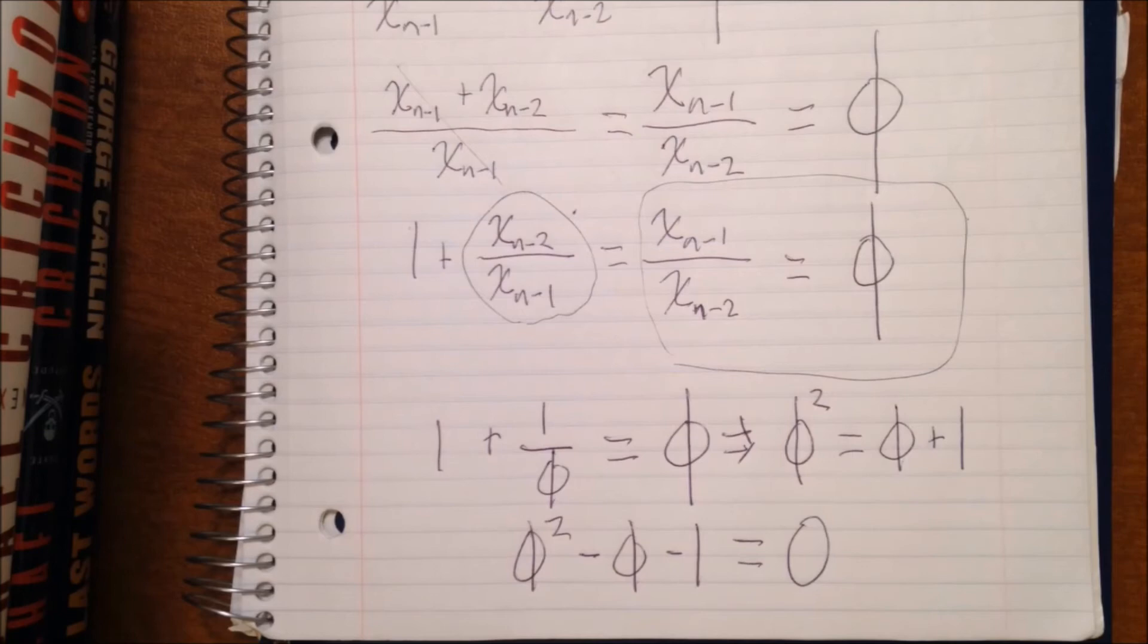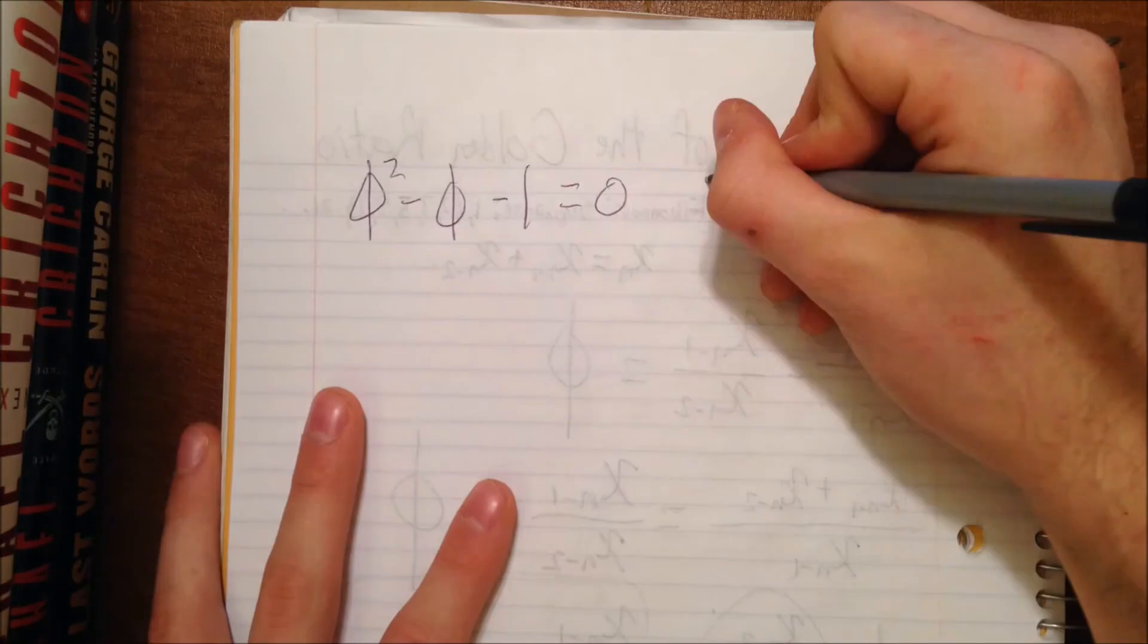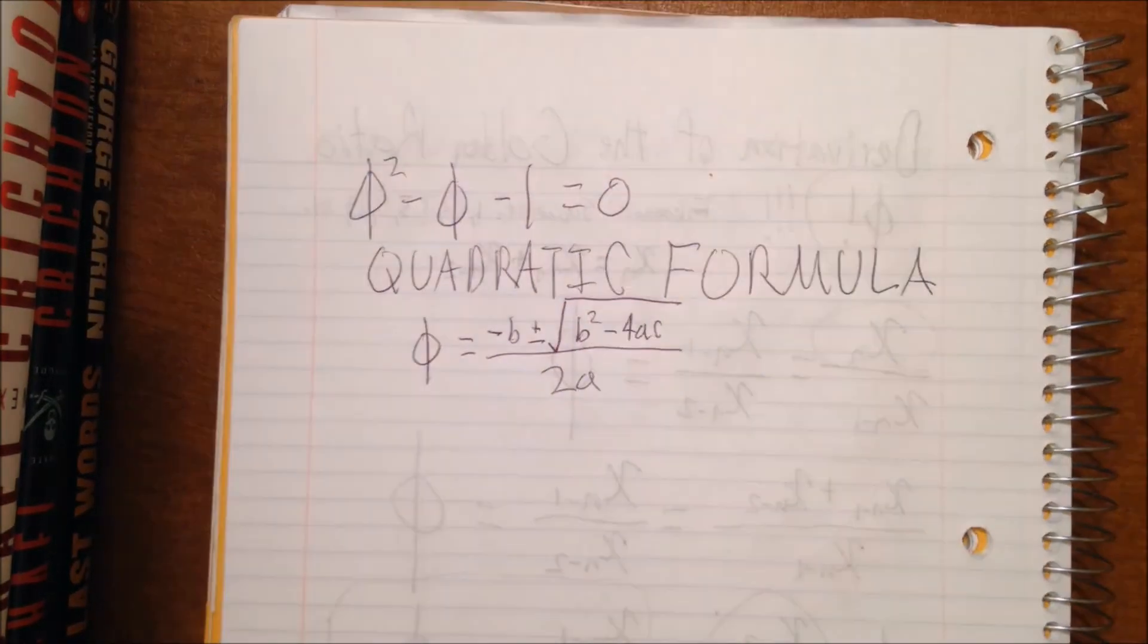So now that we've got this in a quadratic form, we can use that algebraic superhero, the quadratic formula, to get our exact value of phi. Now I'm sure you guys all know that the quadratic formula gives that x is equal to negative b plus or minus the square root of b squared minus 4ac, all over 2a.